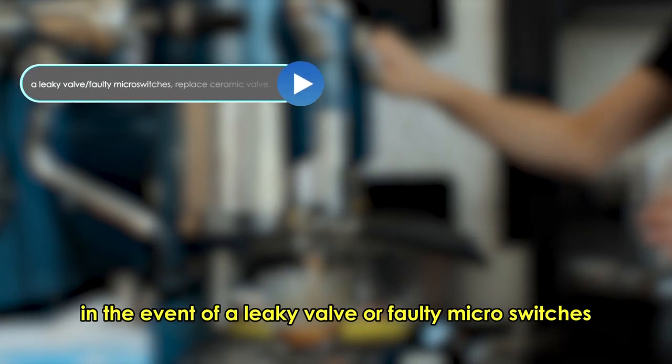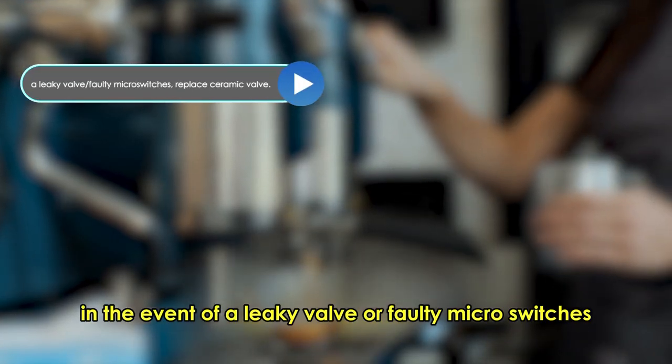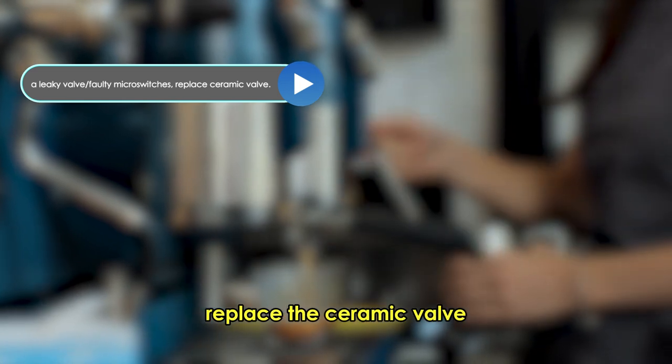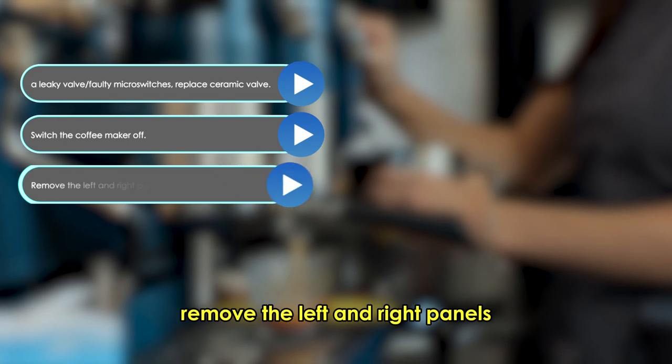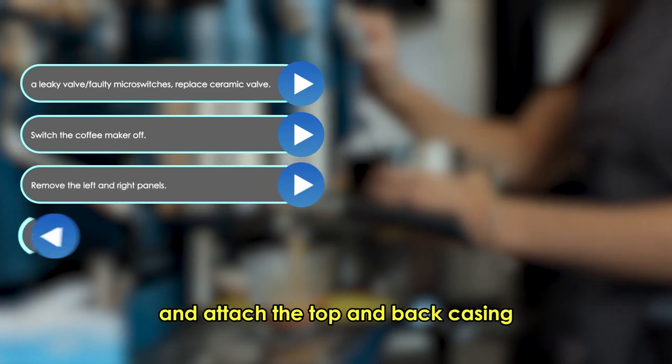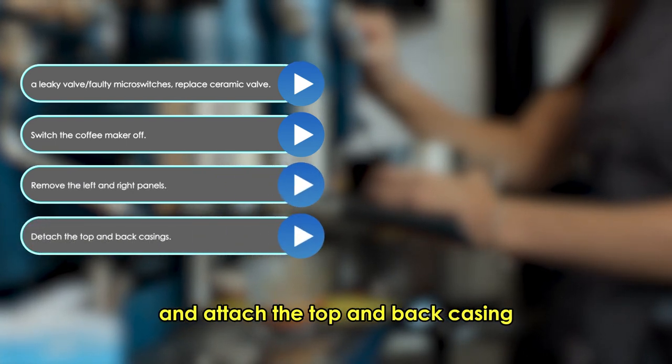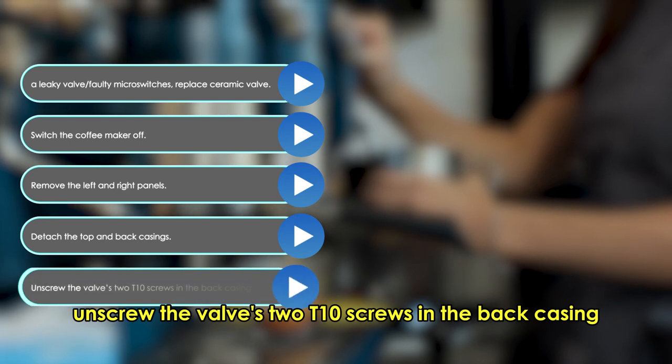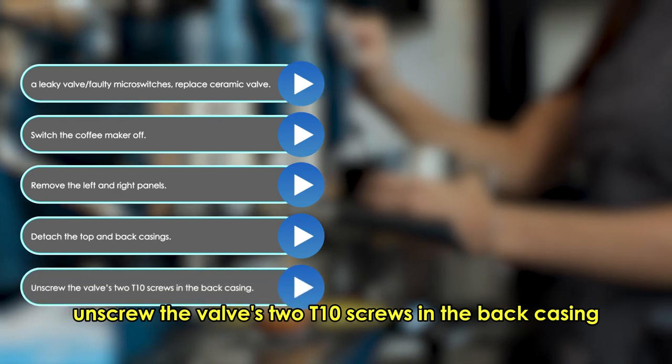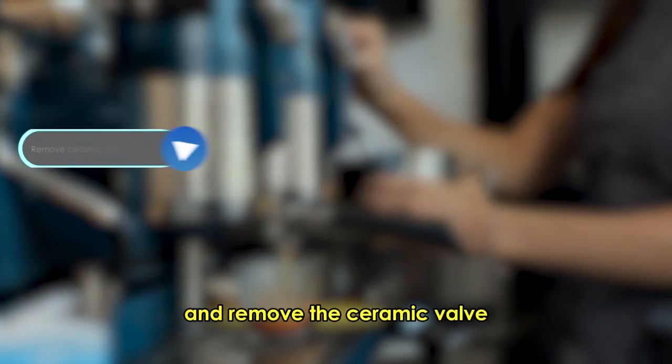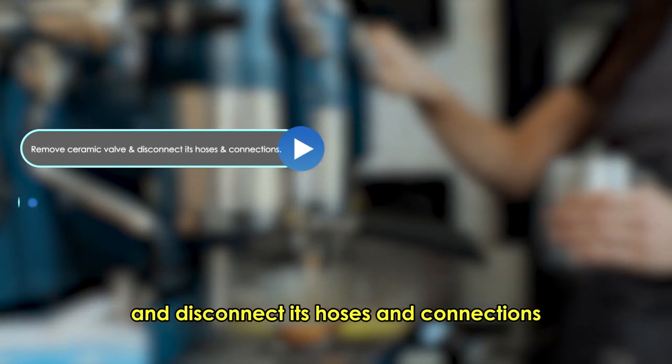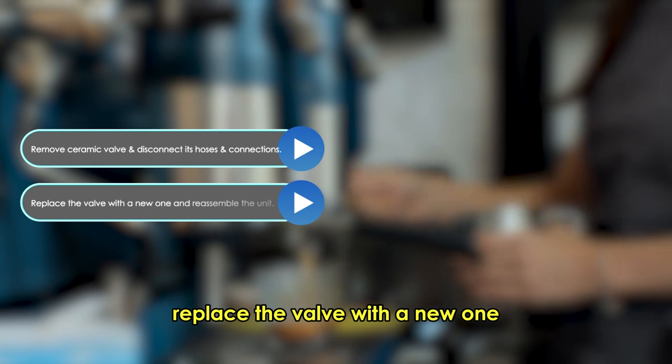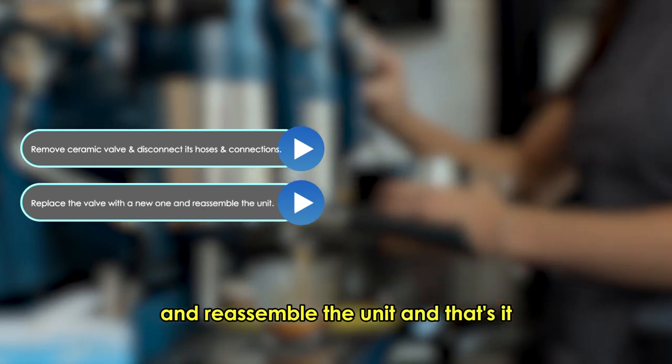Replace the valve. In the event of a leaky valve or faulty microswitches, replace the ceramic valve. Switch the coffee maker off, remove the left and right panels, and remove the top and back casing. Unscrew the valve's two T10 screws in the back casing, and remove the ceramic valve and disconnect its hoses and connections. Replace the valve with a new one, and reassemble the unit.